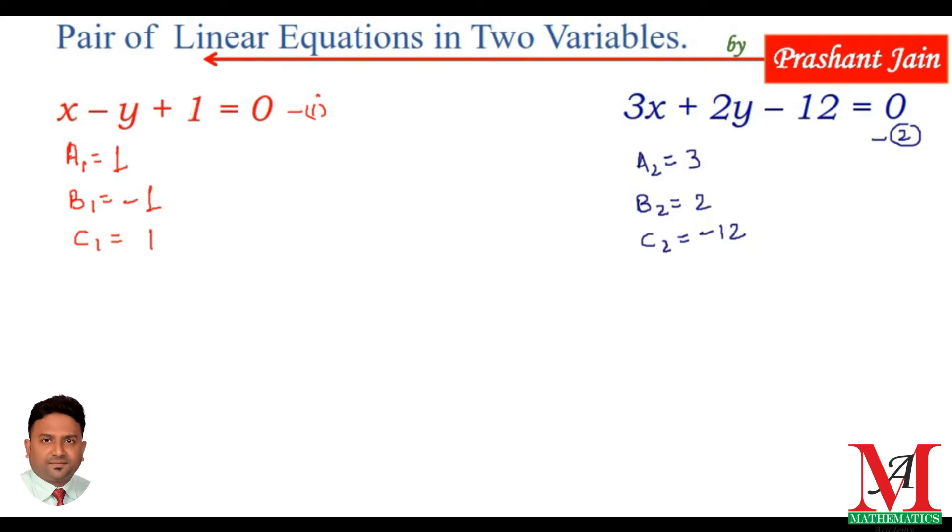Now, first of all, find the ratio of a1 and a2. The ratio of a1 and a2 is 1 upon 3. Now, check the ratio of b1 and b2. b1 upon b2, b1 is minus 1, and b2 is 2.